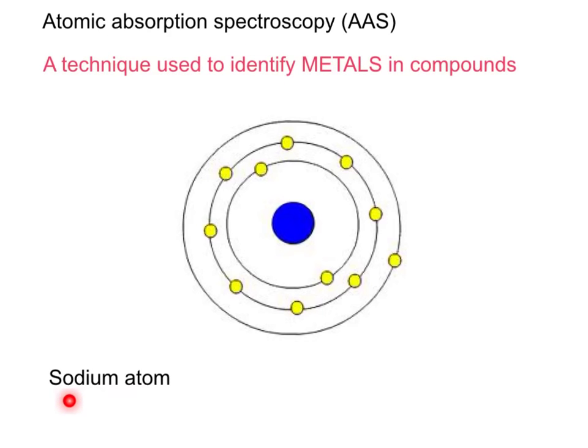So for this sodium atom which we have here, 11 electrons in their orbits, sodium being in group 1.